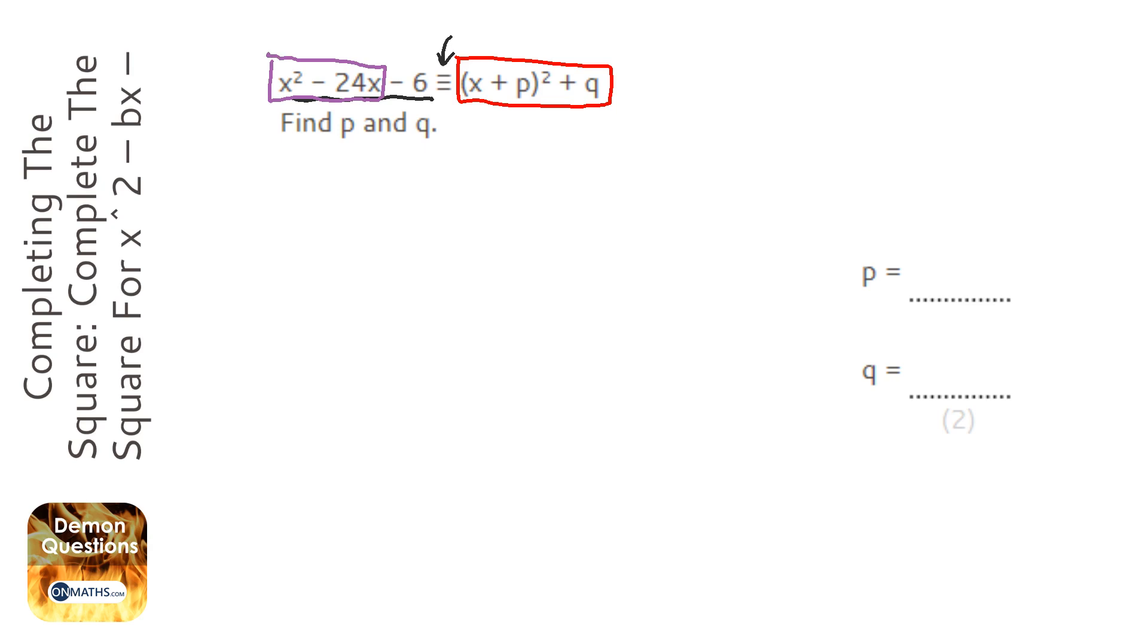The bit in purple, we need to make that into brackets. The way we do that is we get the x and then we take away, because it's a minus, half of the number before the x in the question. Now the number before the x is 24, so that's going to be 12.